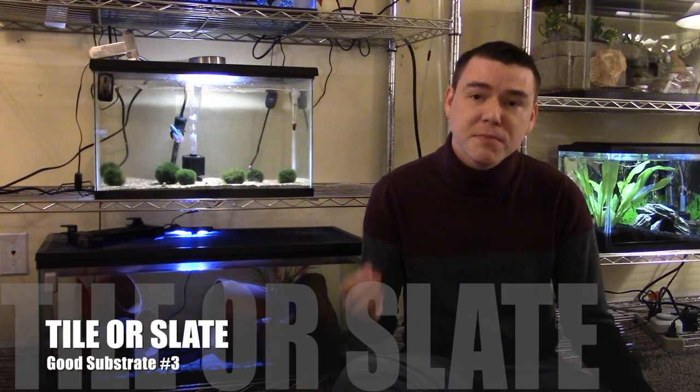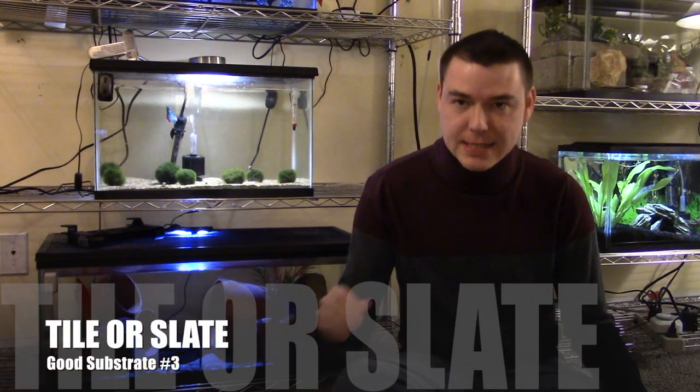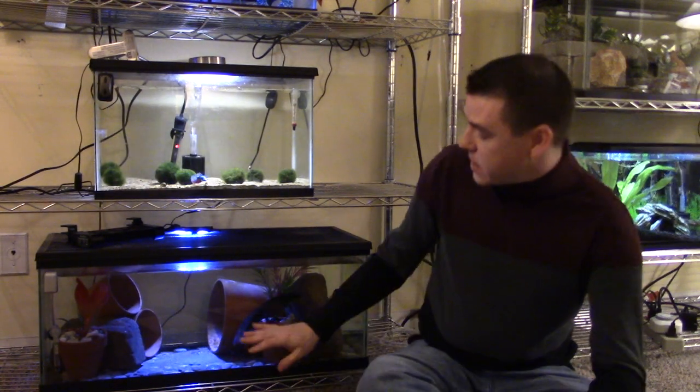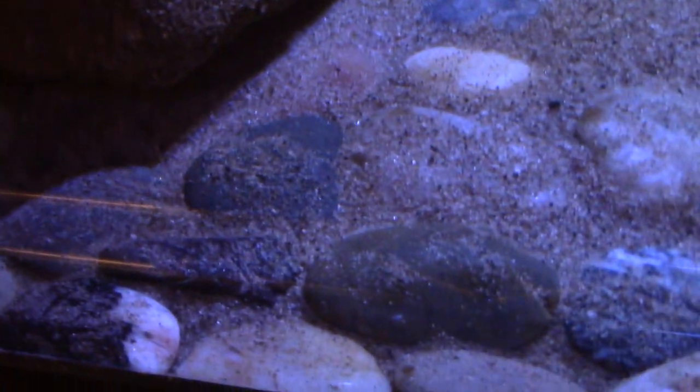Another good substrate option for axolotls, and this is one of my personal favorites, is to use some sort of tile or slate. Not all tiles are going to be appropriate. For example, I wouldn't suggest using vinyl, but there are quite a few ceramic and rock and slate tiles that you can get at the hardware store that make really good axolotl substrates.